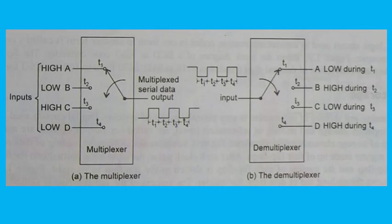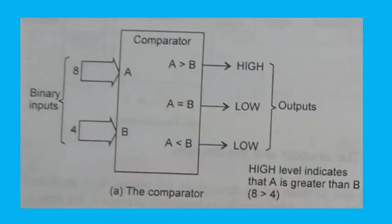Demultiplexing is the inverse of multiplexing. It is the process of switching information from one input line onto several output lines. A demultiplexer is a digital circuit that takes a single input and distributes it over several outputs — a 1-to-N device. In the demultiplexer shown in fig. b, if the switch connects to outputs A, B, C, and D for times T1 through T4, the output is as shown. The figure illustrates a 1-to-4 demultiplexer.